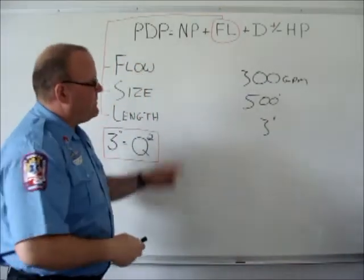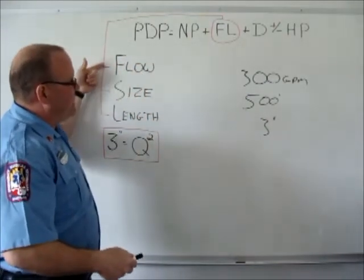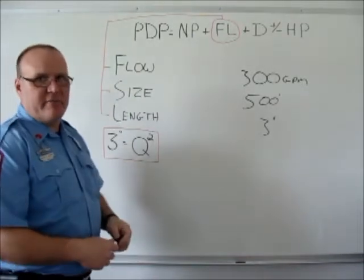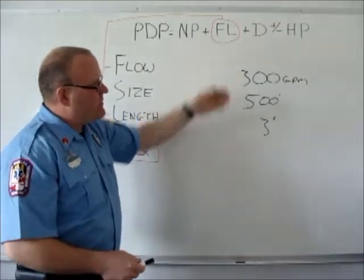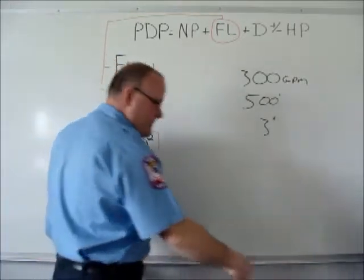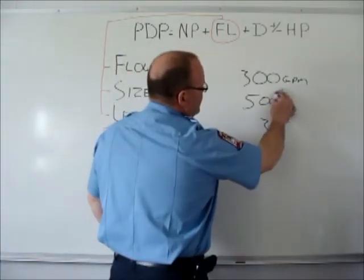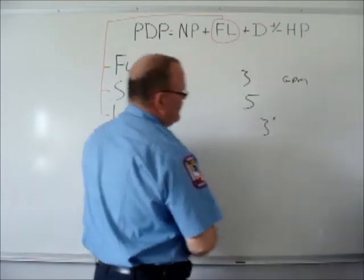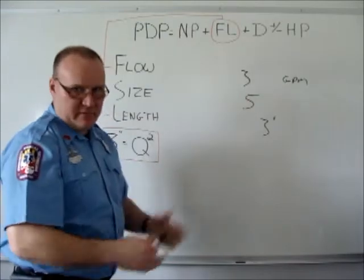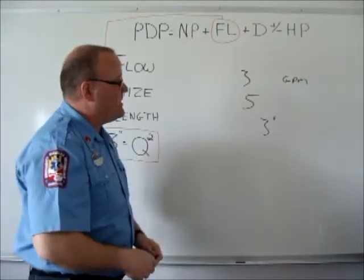So the first thing we're going to do, we identified our flow. Both the flow and the length we're going to divide by 100. So the easiest way to do that, since we have a nice round number, is to knock off the zeros. And the number that we end up there with the gallons per minute, once we divide by 100 and knock off the zeros, it becomes a three.